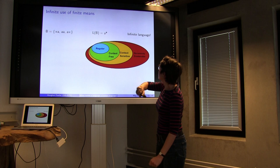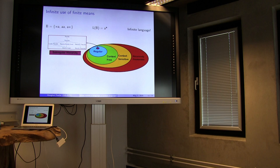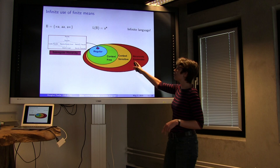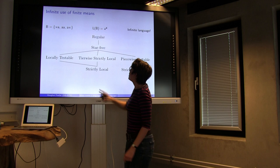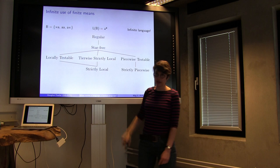In the Chomsky hierarchy, you may be wondering where this falls. It falls way, way down at the bottom. These languages don't require very much power at all to explain them. Way down here is the sub-regular hierarchy, and you can see 'regular' at the top of it in the blue circle. And what we just did is down at the very bottom.